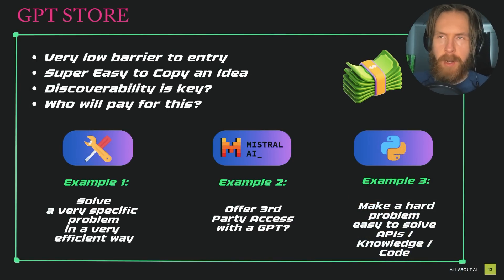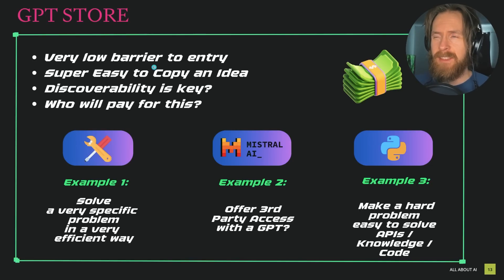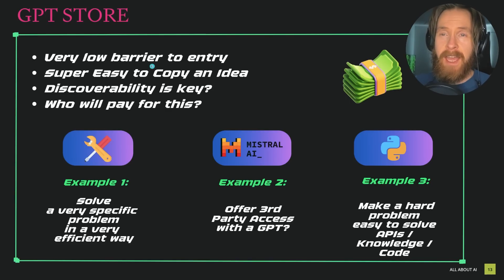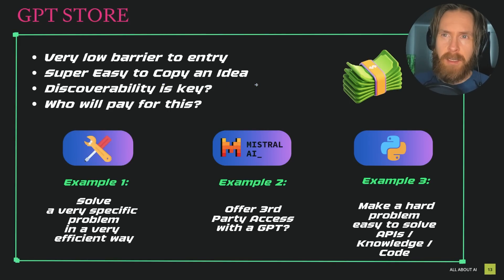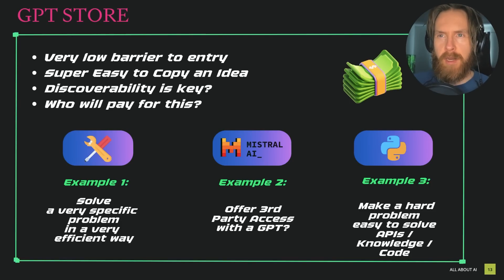These are basically how I have thought about this GPT store. We all know that there's a very low barrier to entry. If you have some experience with ChatGPT, you can basically create your own GPT. That means we're probably going to flood this store with different kinds of GPTs. It can be hard to separate which one is good, which one is bad. And if you find a good one, it should be super easy to copy it. This means discoverability is going to be key — is there some kind of SEO, a search function, a leaderboard like popular apps?